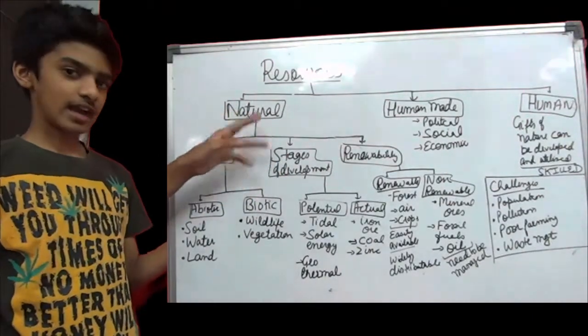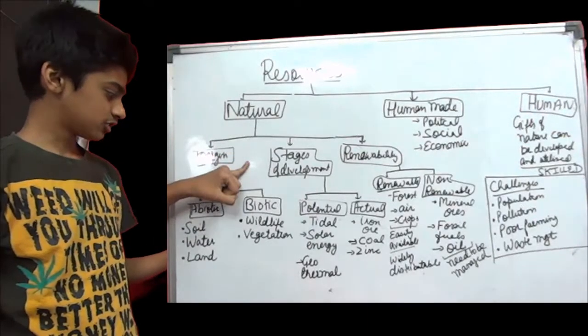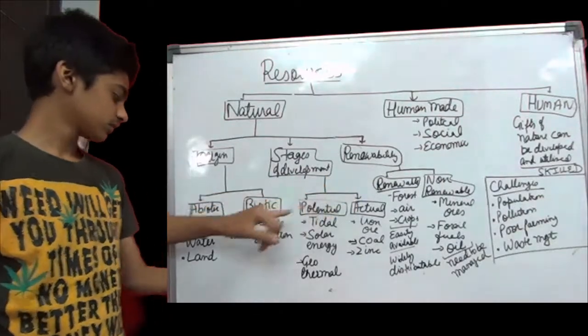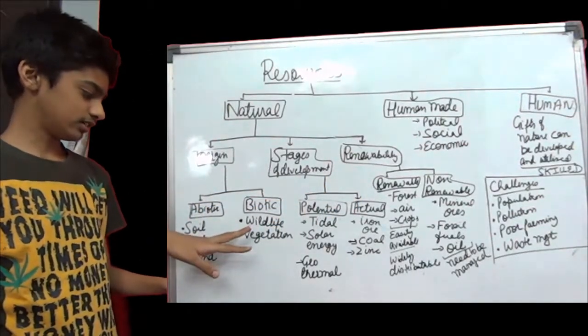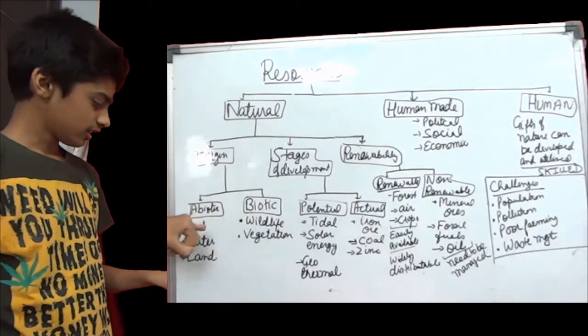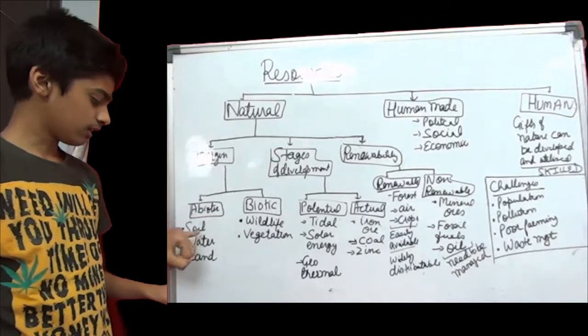Natural resources can be classified on three bases: origin, stages of development, and renewability. Origin can be divided into two parts: biotic and abiotic. First, I will tell you examples of abiotic resources: soil, water, and land.